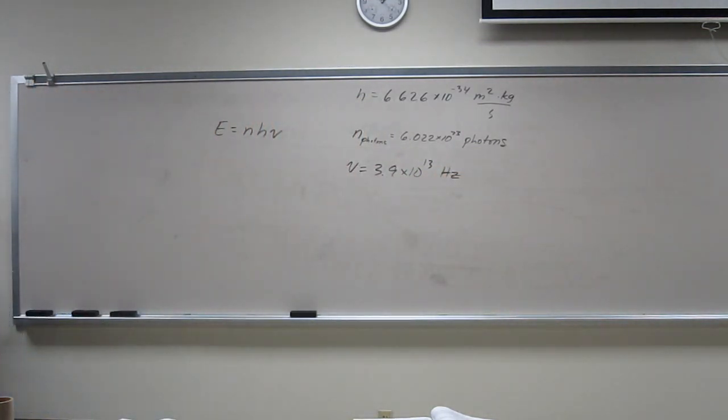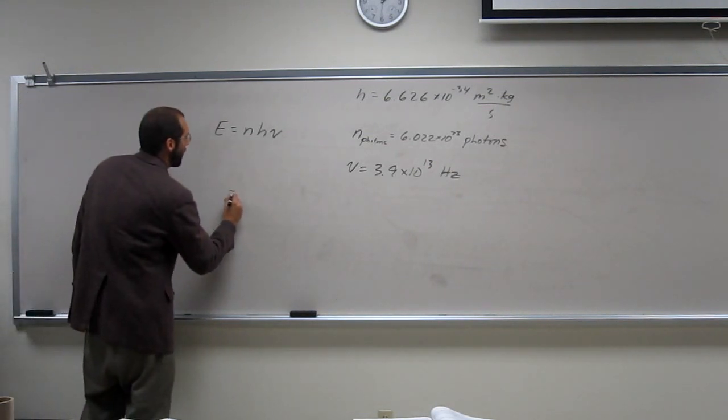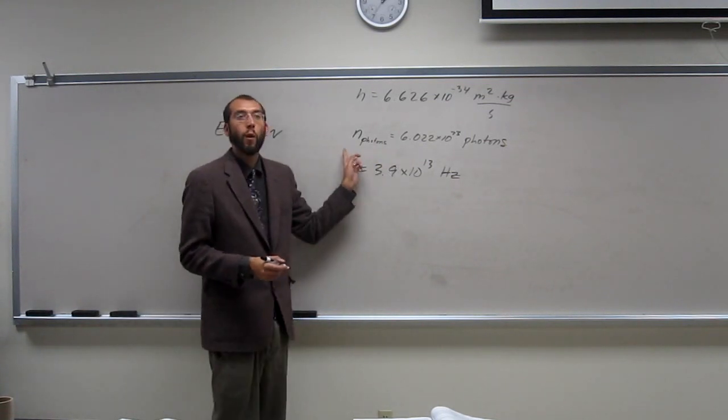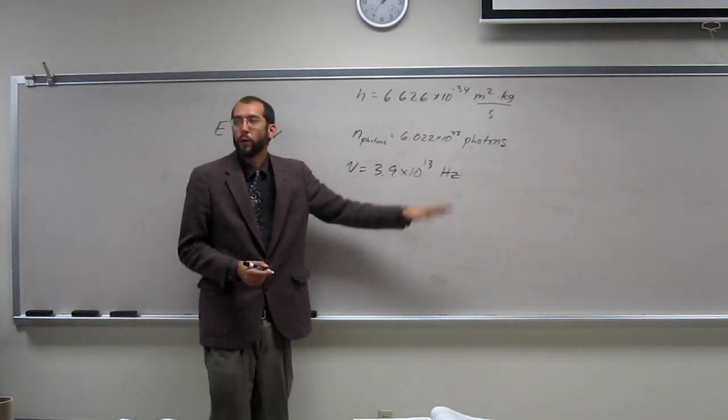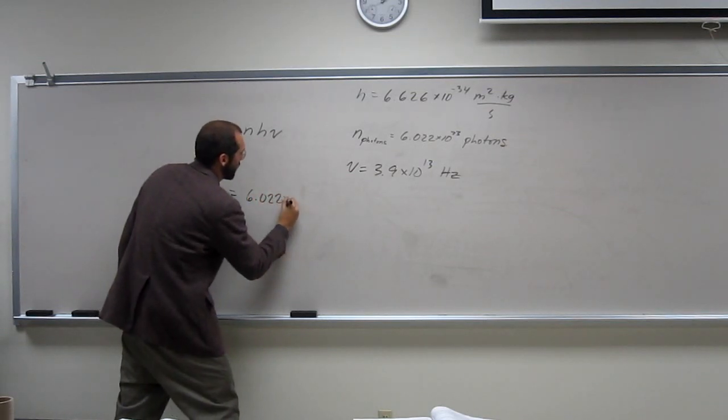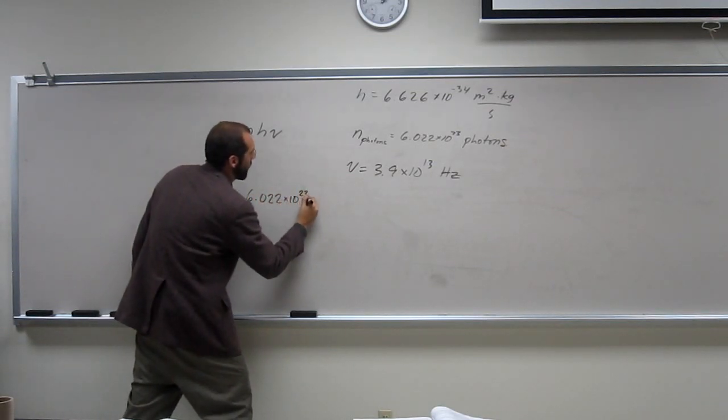Okay, so just plug it in, and then you should get what you want. So n, in this case, it's not one photon, it's a mole of photons, right? So 6.022 times 10 to the 23rd.